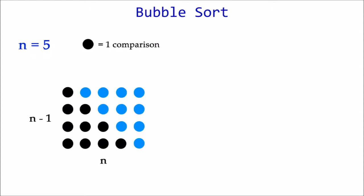n minus 1 is the number of passes. After multiplying, we get n squared minus n. Divide that by 2 to get the area of the triangle. And voila, we have our formula.